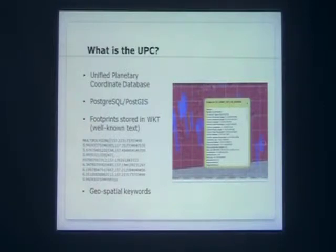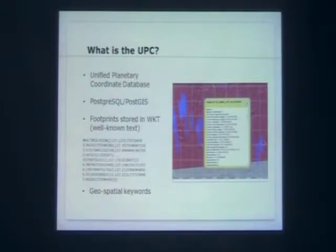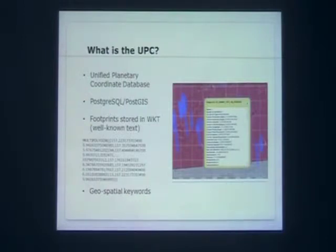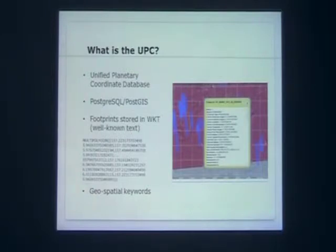We also add geospatial keywords in the database that you can search on. For the third version of this database, which we're going to release in a couple months, I want to get an email list for people who are interested. One of the nice things about this geometry is a lot of sites are stuck with just center points from the labels, which aren't very exact. What we're doing when we create this database and run it through the cluster is using ISIS and the newest SPICE data to get as close as we can to where these things land on the planet. So scientists can really line up their features or area of interest and nail the data they want.